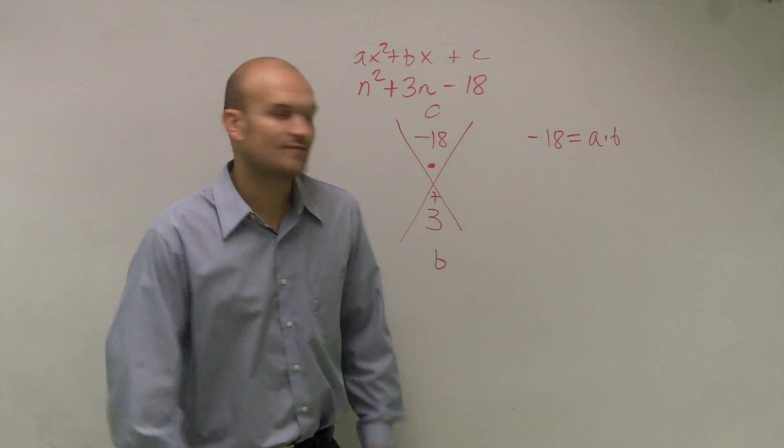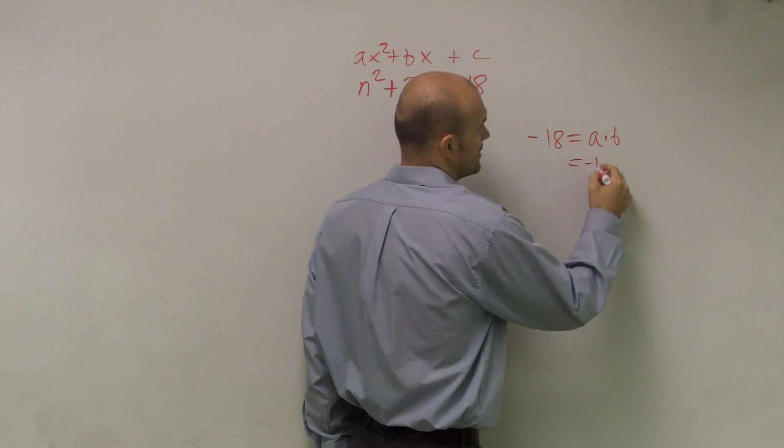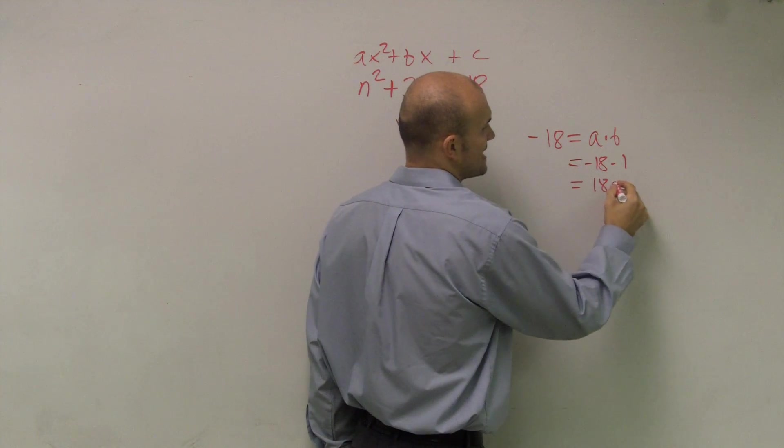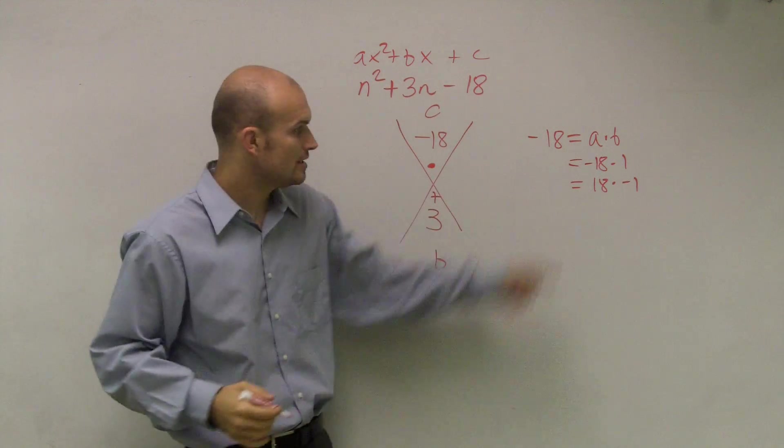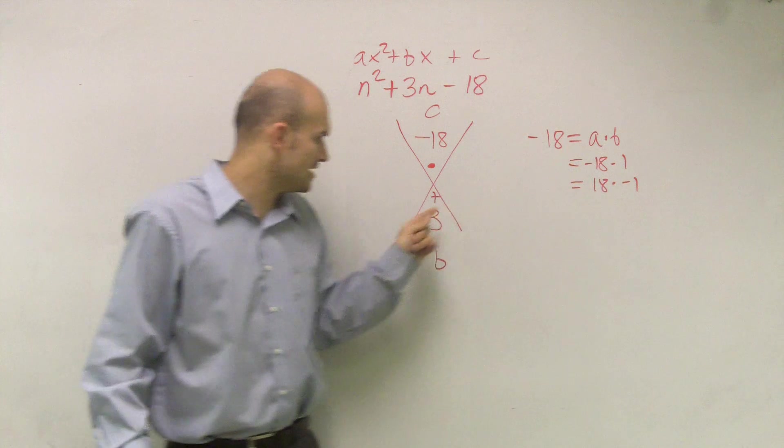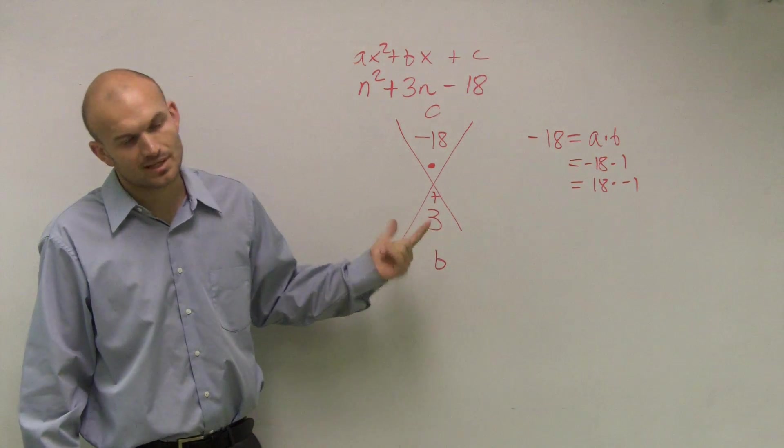So now let's look at the negative factors. I could have negative 18 times 1 or I could have 18 times negative 1. Do both of those provide you with a negative 18? Yes. Do either of those, when added up, give you a 3? No.